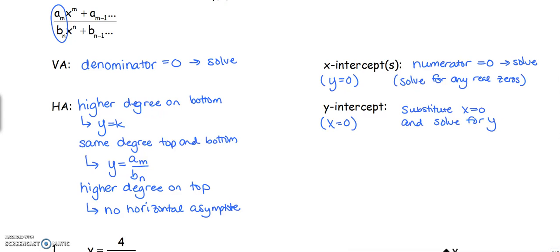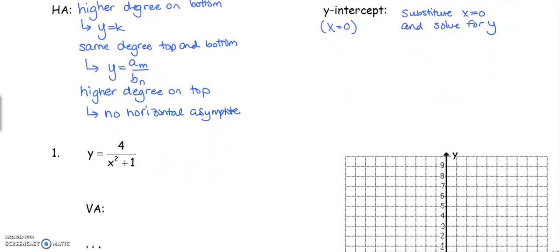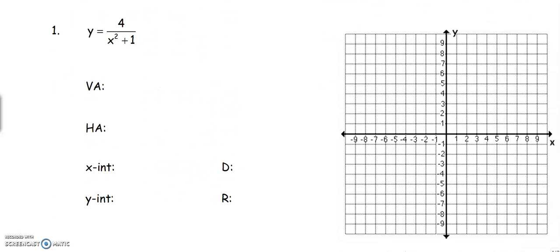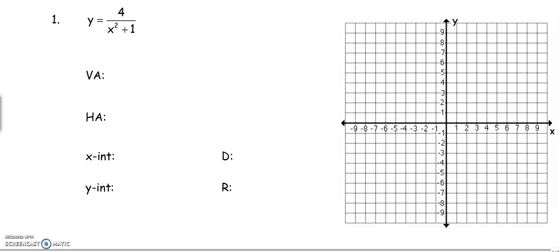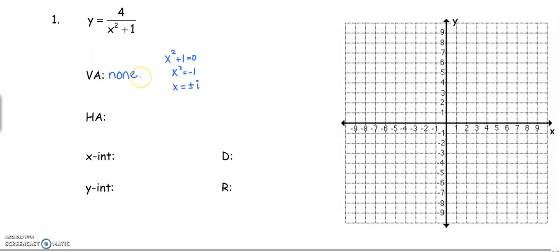Go ahead and take your calculators out. We look at our first graphing question: y equals 4 over x squared plus 1. For the vertical asymptote, we set the denominator equal to 0 and solve. We've got x squared plus 1 equals 0, which gives us x equals plus or minus i — that means imaginary. We can't see imaginary things on our graph, so in this case we don't have any vertical asymptote.